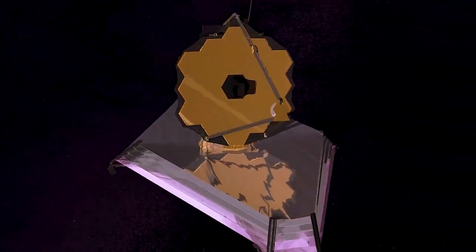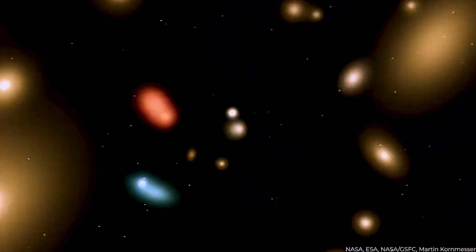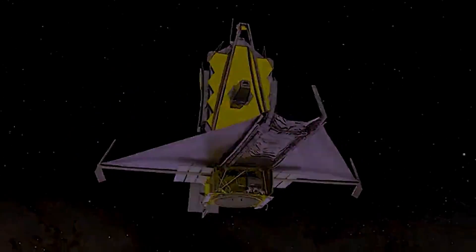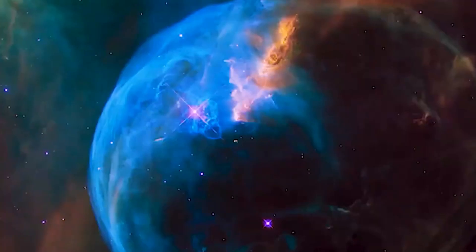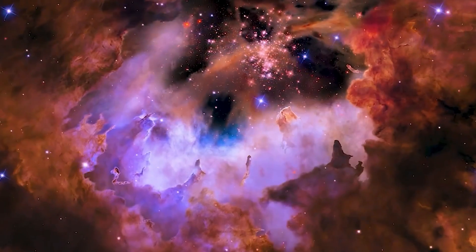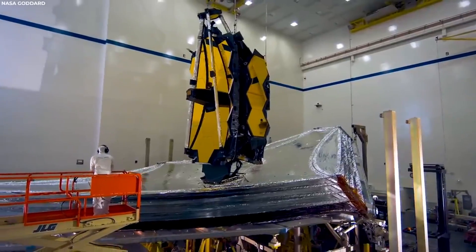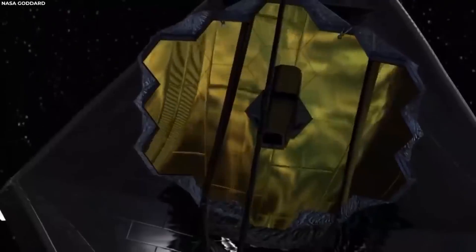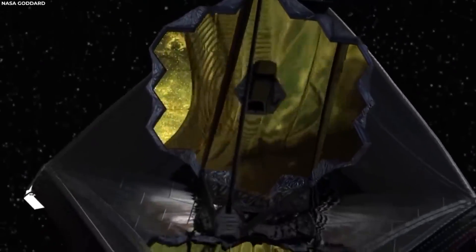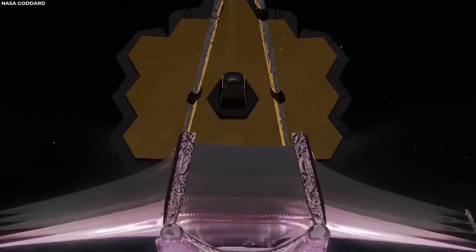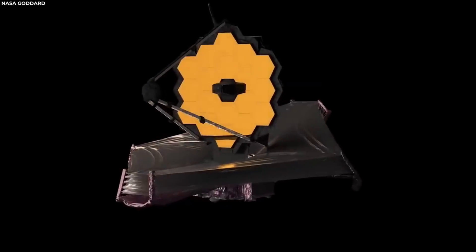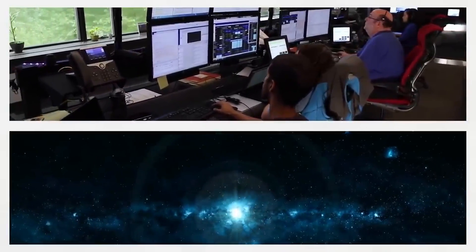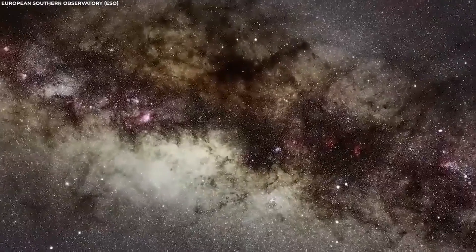The James Webb Space Telescope is the largest and most powerful space telescope ever built. It is an infrared telescope, meaning that it is designed to detect light in the infrared portion of the electromagnetic spectrum. The James Webb Space Telescope's primary mirror is 6.5 meters in diameter, three times larger than the Hubble Space Telescope's mirror. This means that JWST can collect four times as much light as Hubble, allowing it to see fainter and more distant objects.